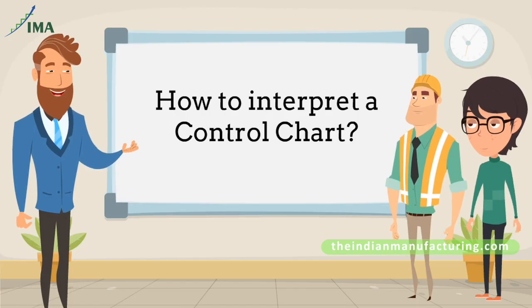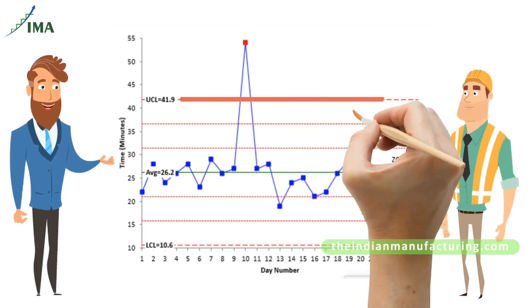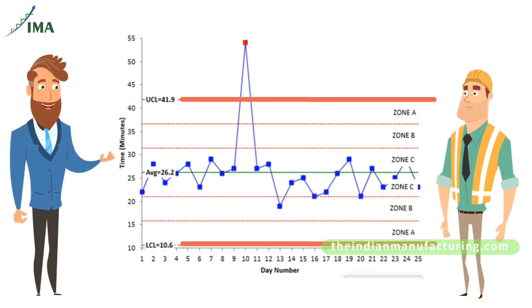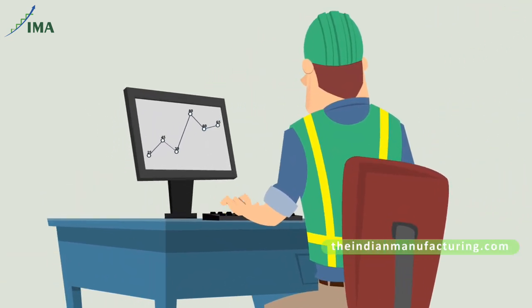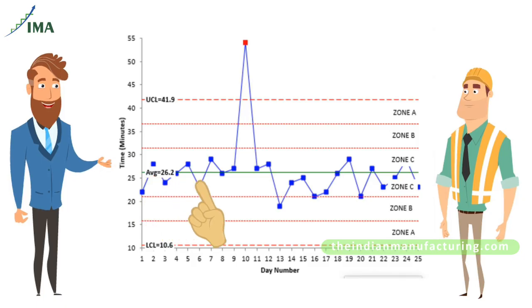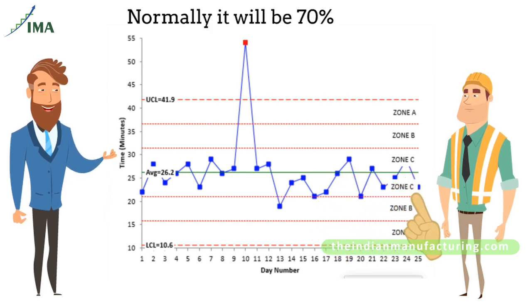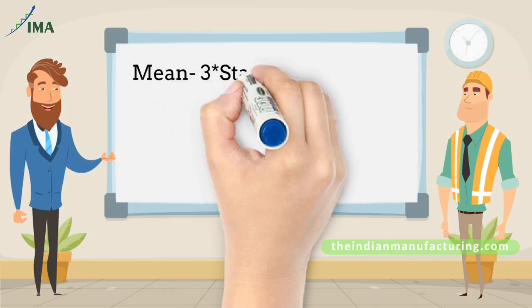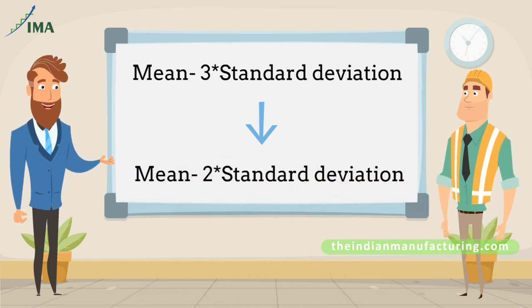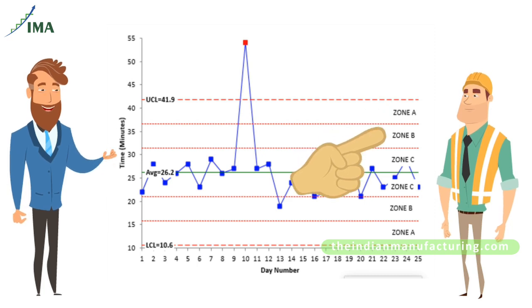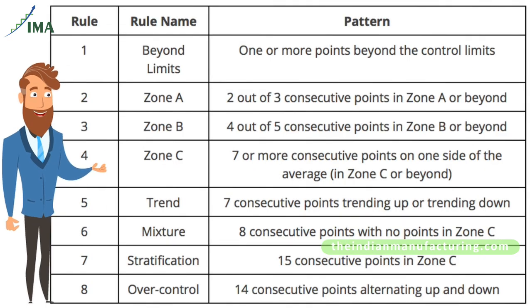How to interpret the control chart: a control chart can be used to control the process. When the process goes beyond the UCL or LCL, we know it is out of control. But a control chart can be used for more than that — we can use it for monitoring the process closely. One practice is to have an operating range that is stricter than the total specification, using mean minus 2 times standard deviation. We can also divide the total specification into three equal zones below and above the mean, applying rules to interpret the graph more closely.